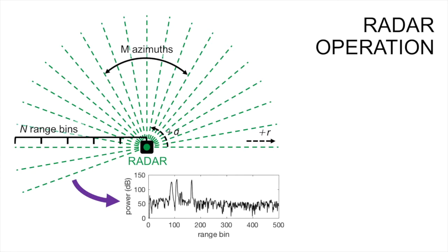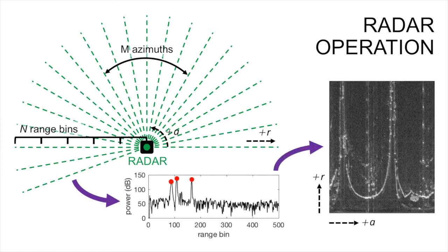For each azimuth, the radar returns a power range spectrum in which peaks generally correspond to objects in the environment. The spectra for a full rotation form a polar image, as shown on the right.